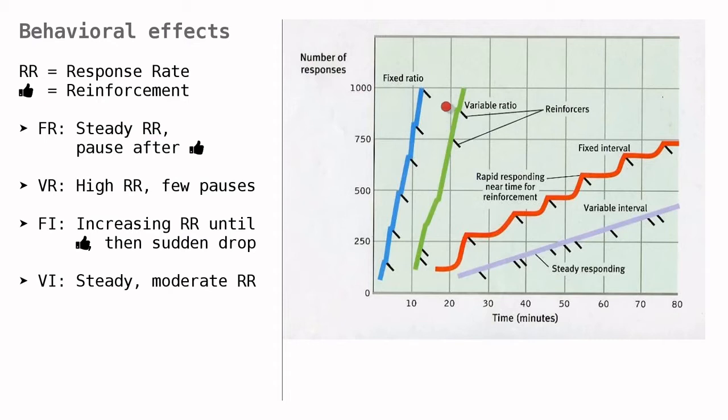With the variable ratio here in green, the response rate can be very high if the reward is high. Because every roll of the die is a probability of winning, it makes sense to roll as quickly as possible.